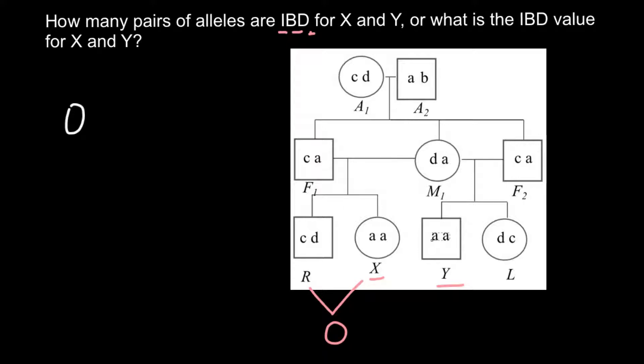Another variant would be 1, when we would see that one allele in both individuals would be the same. For example, compare individual R and F. Genotype here is CA and here CD. So one allele out of two would be the same, identical by descent. Value 1 here.